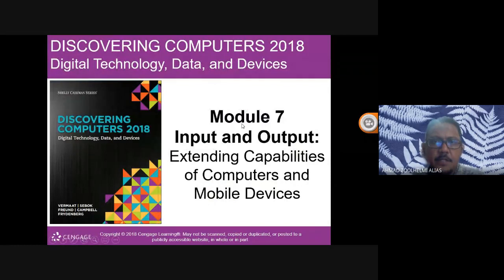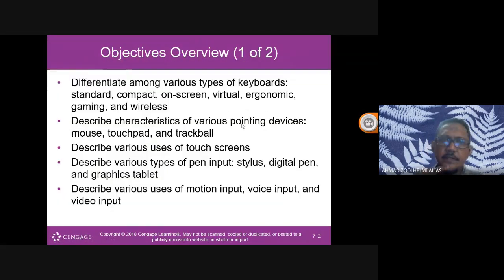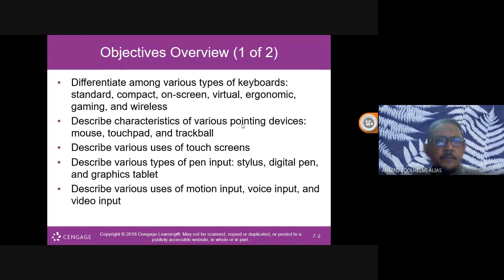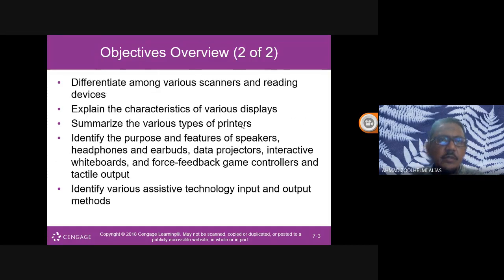Second part of chapter 2: input and output. What will be covered in this part 2: differentiate among various types of keyboards, characteristics of pointing devices, touch screen, pen input, motion input, and differentiate among various scanners and reading devices.